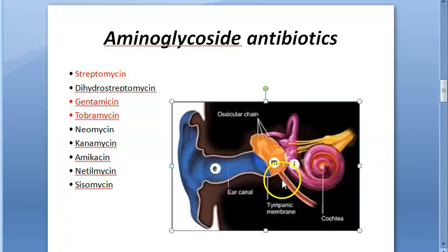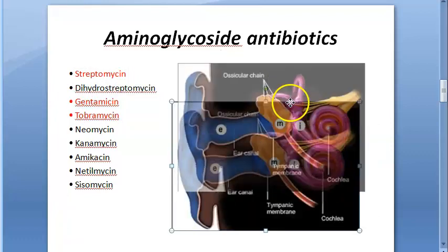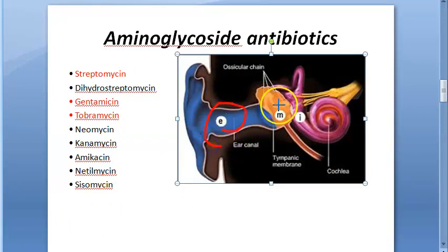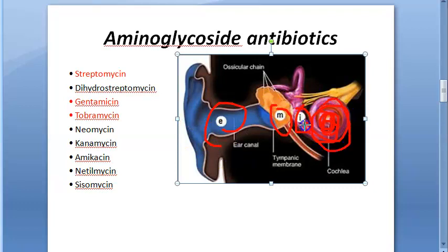Looking at this image: you have the external ear, middle ear, and inner ear. In the inner ear, the spiral structure is the cochlea.